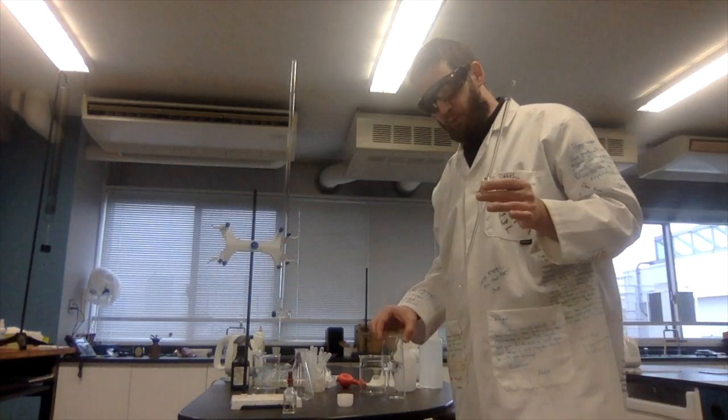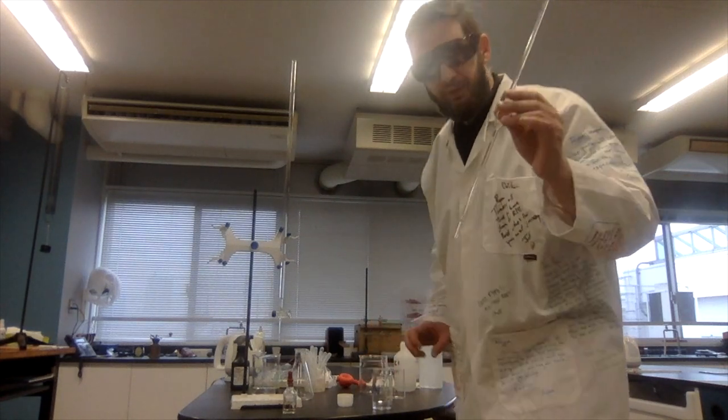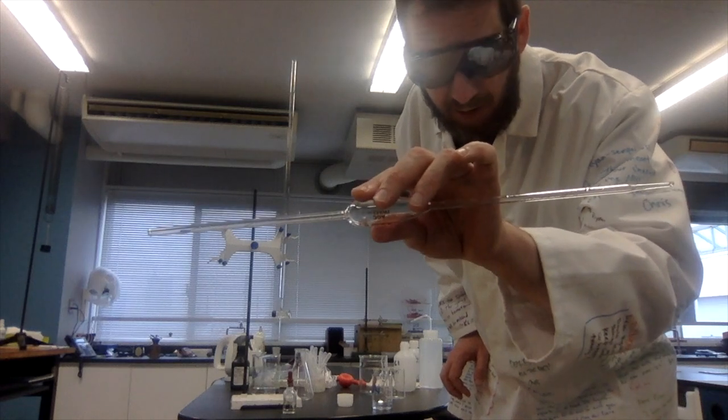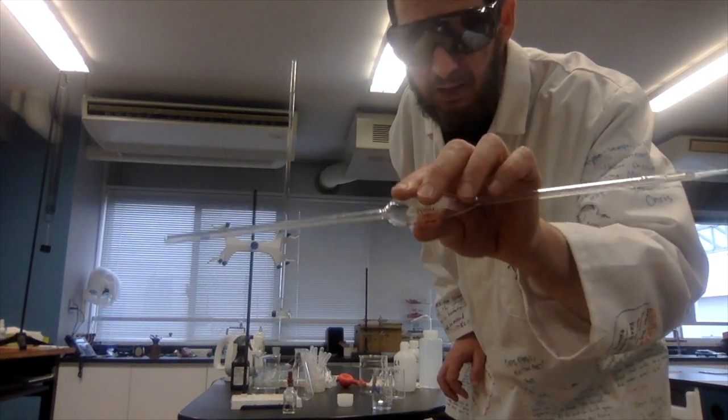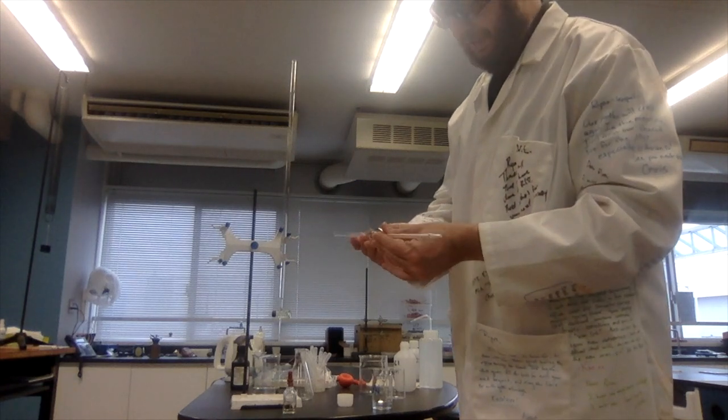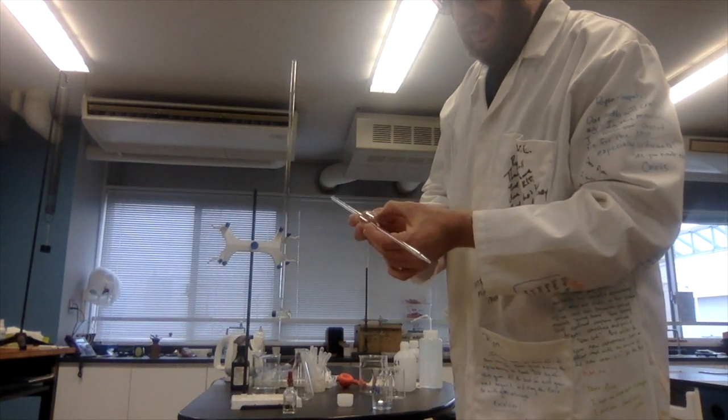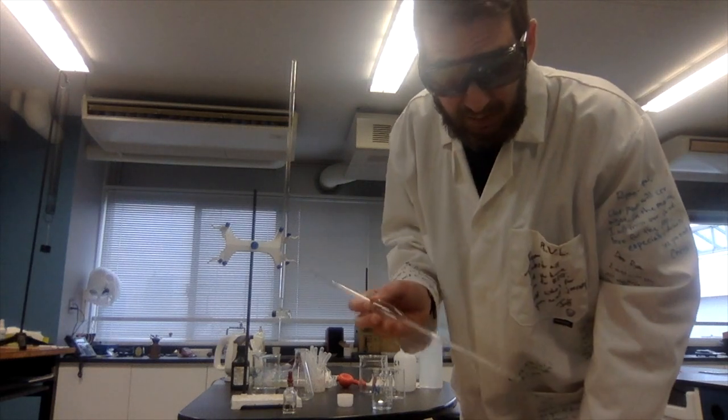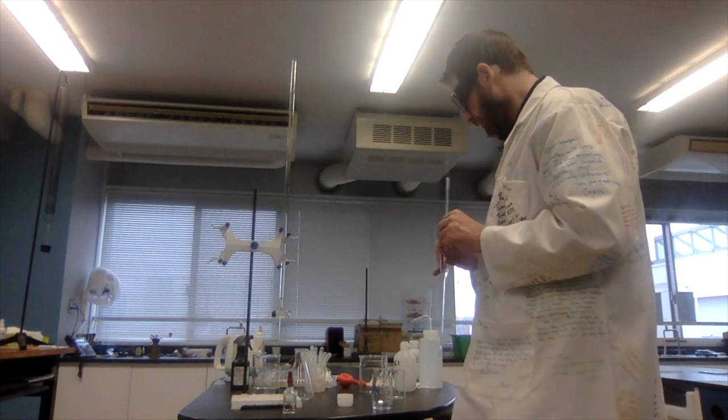However, I will know the volume quite precisely using this device. This is a volumetric pipette and it measures exactly 25 milliliters. The uncertainty on this volumetric pipette is plus or minus 0.03 milliliters. So quite precise.